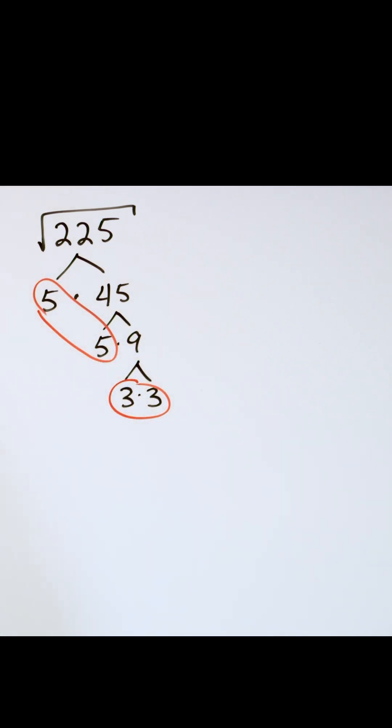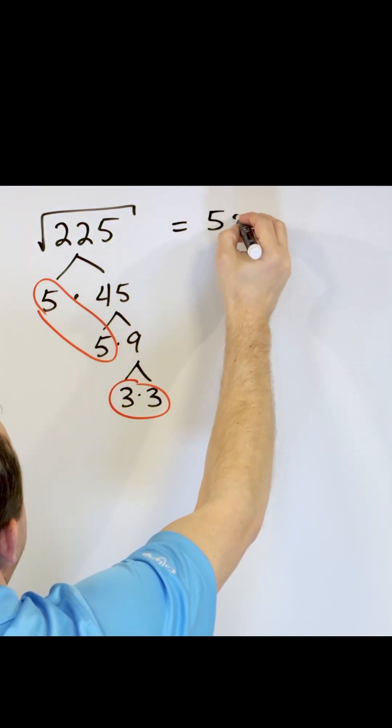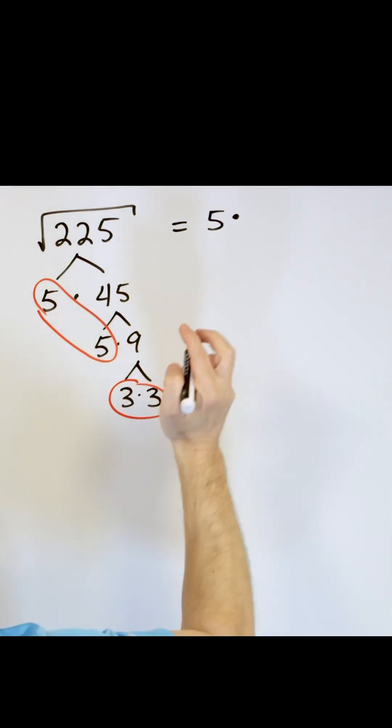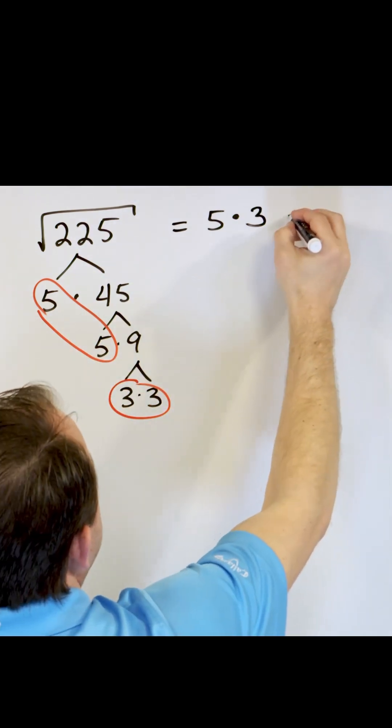So when I'm building my final answer, I go over here and I said the answer will be this, but counted only one time, times this, which only counts one time, because I'm looking for pairs. Five times three is 15.